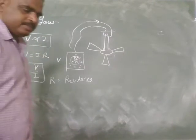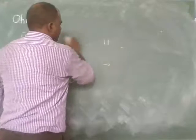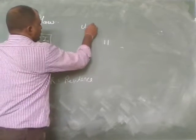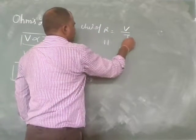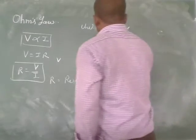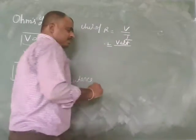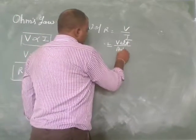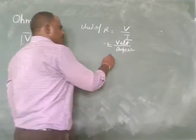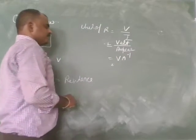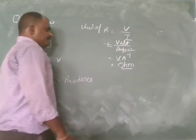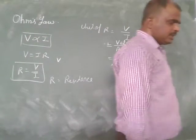What is the unit of R? R is equal to V upon I. The unit of V — potential difference — is volt. The unit of current is ampere. So volt per ampere — what does that give us? That will be ohm. So the unit of resistance is ohm.